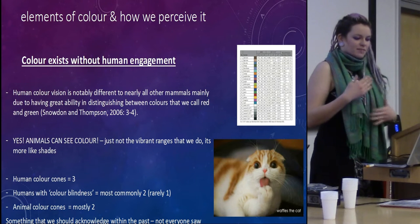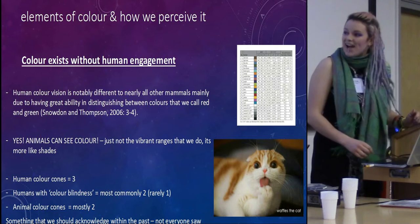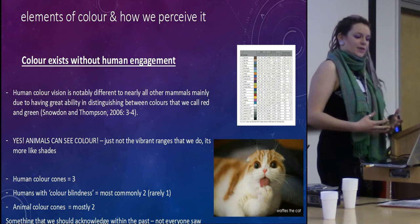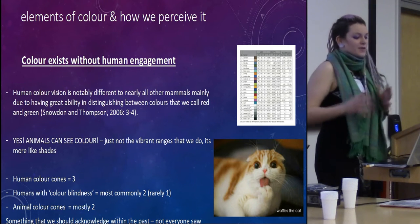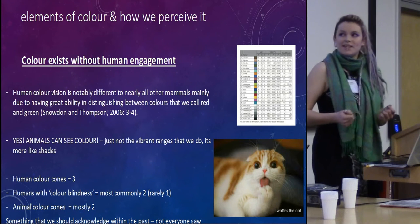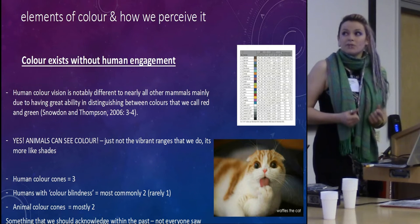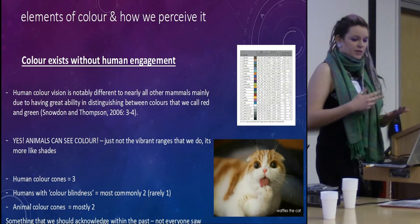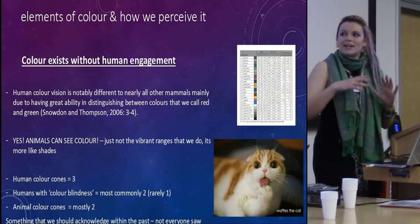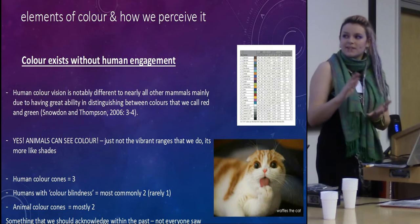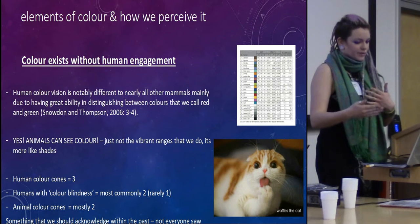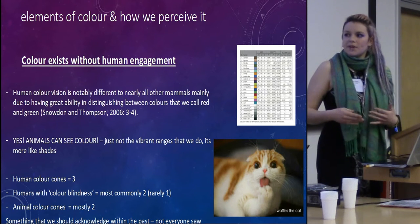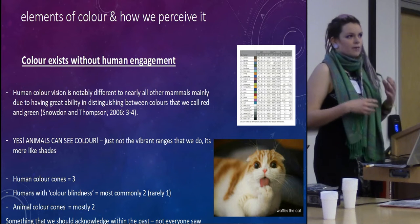How do we perceive colour? As I keep saying, colour exists without human engagement. Human colour vision is completely different to all other mammals. Yes, animals can see colour, although in varying shades. We have three colour cones, which let us identify red, green, and blue. People who suffer from colour blindness have two cones and often get confused or can't see certain colours — and very rarely one. Animals have two. So this led me to think about colour within the past and how not everyone can see exactly the same.